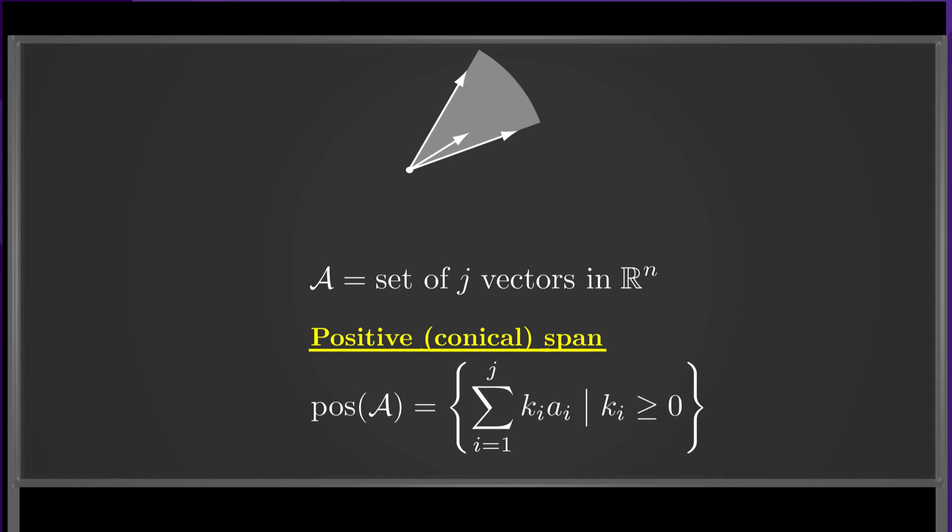Next we define the positive span, also called the non-negative span or the conical span. It's defined as the set of all linear combinations where the combination coefficients are non-negative. All points inside the cone shown can be obtained by a non-negative linear combination of the vectors. In fact, we could get rid of the vector inside the cone, since it doesn't change the positive span.